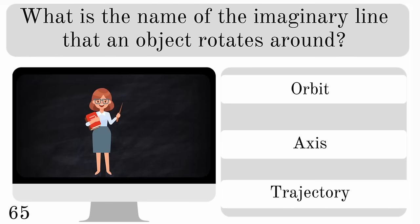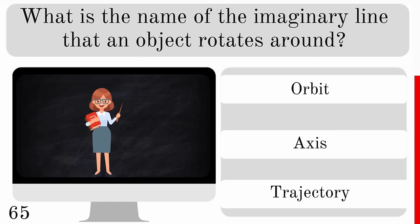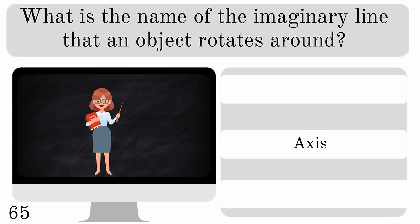What is the name of the imaginary line that an object rotates around? Orbit, axis or trajectory? The correct one is axis.